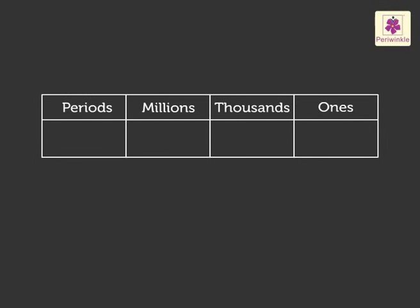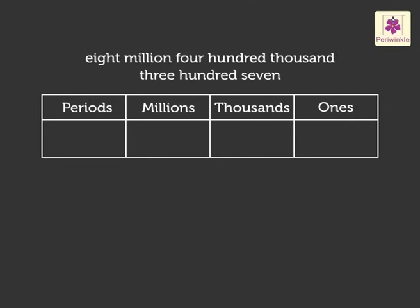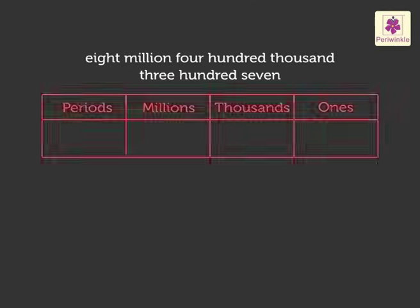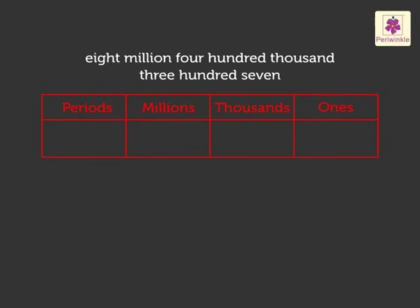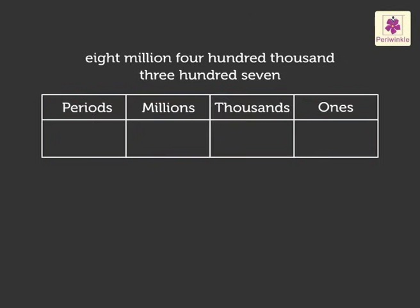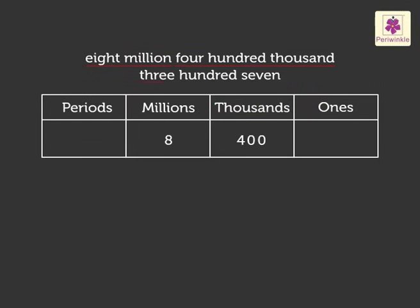Example: 8,400,307. Place the digits in the place value chart, starting with 8,000,000 in the millions period. Next, 400,000 in the thousands period. Lastly, 307 in the ones period.